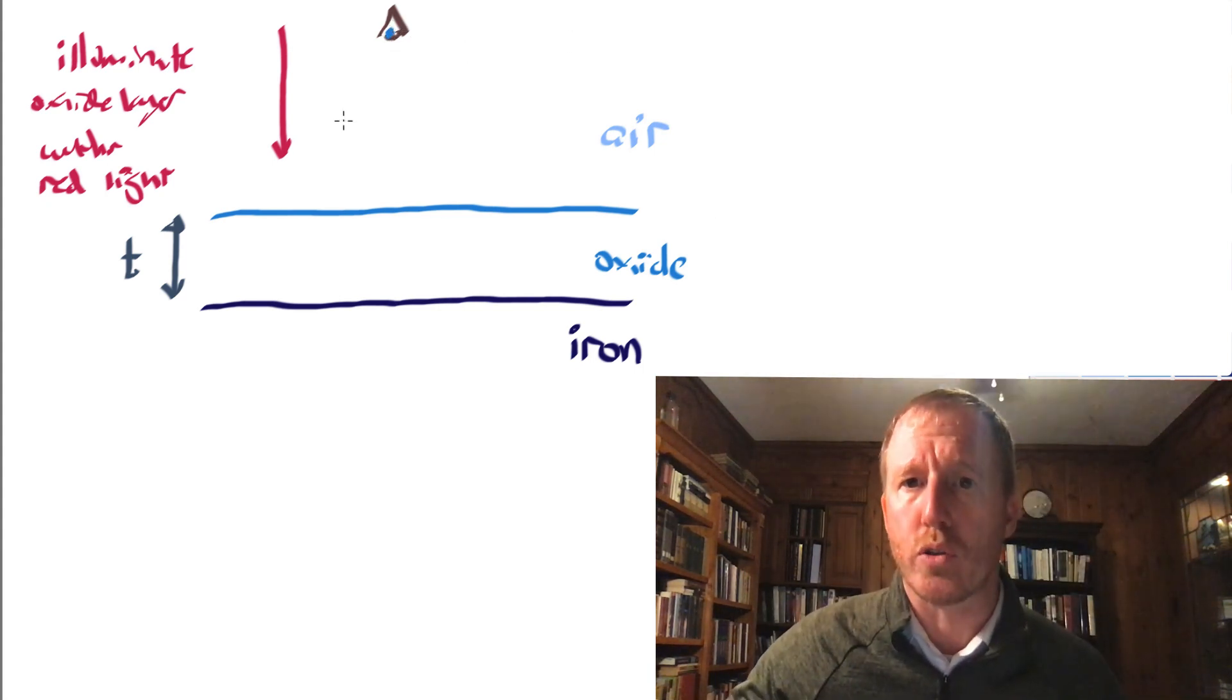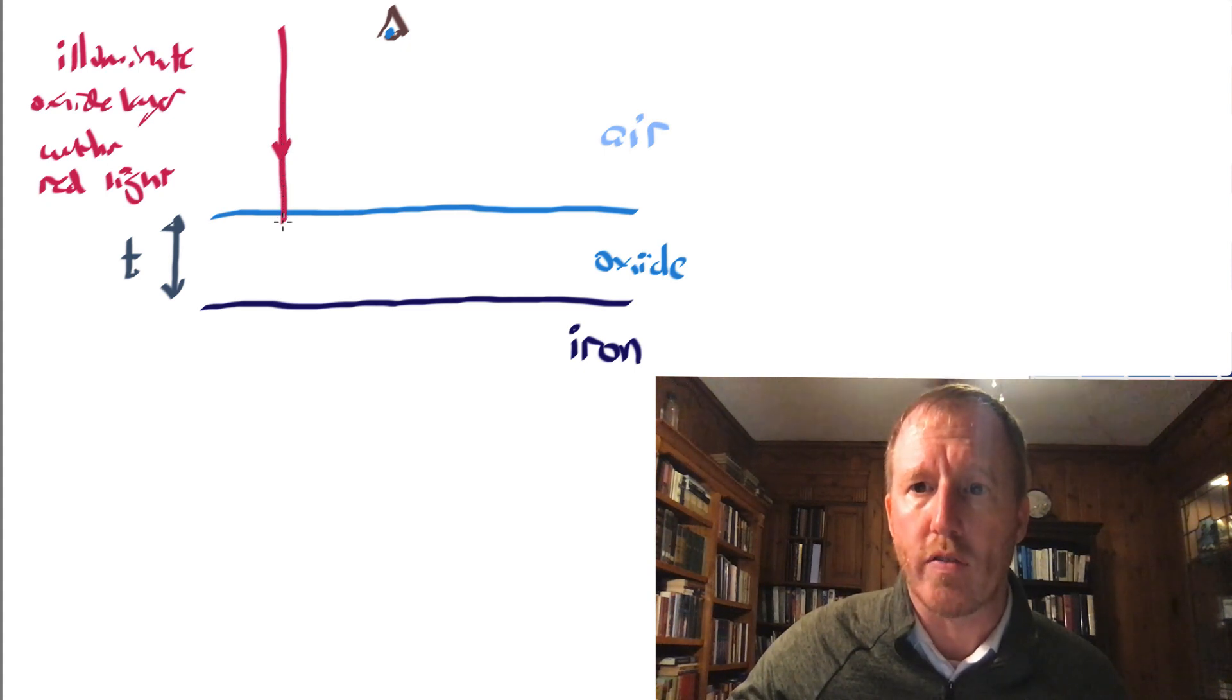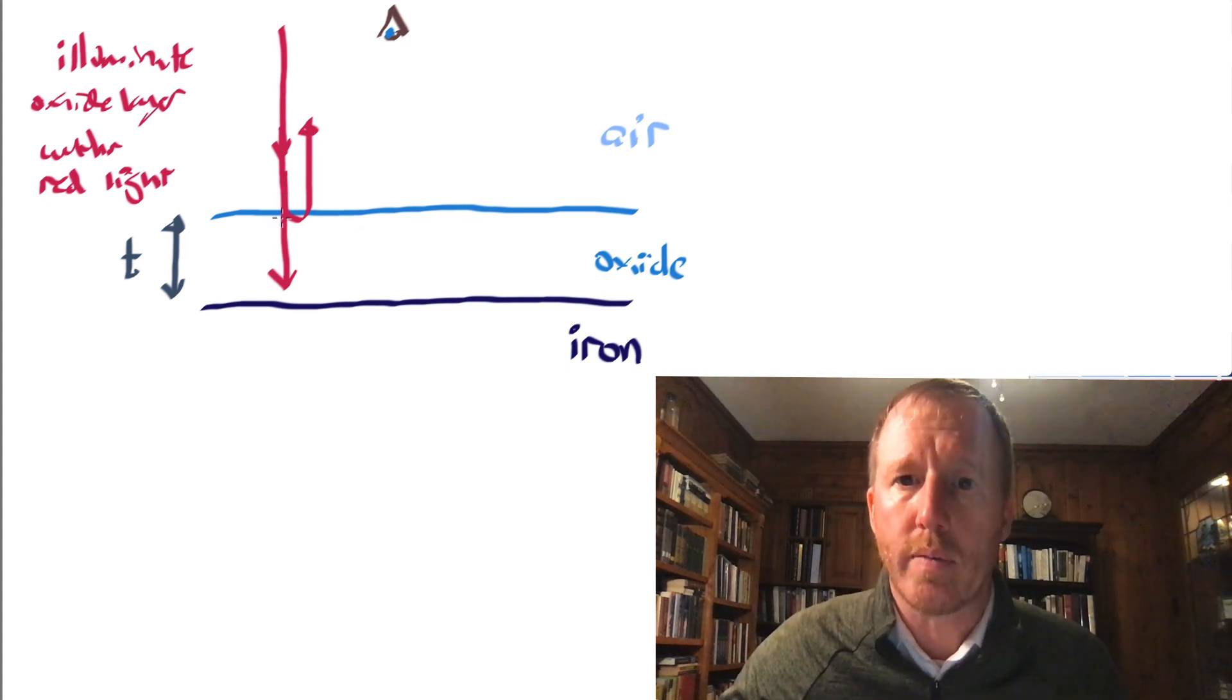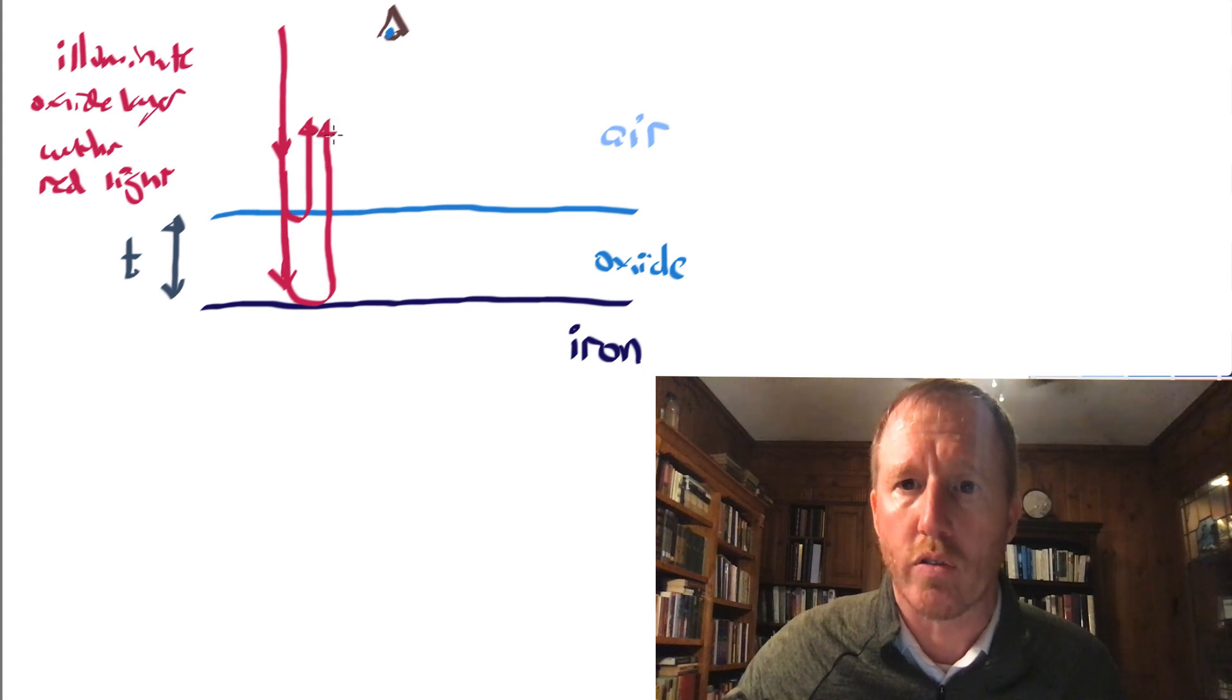Now what happens to this red light? Well, some of it is going to pass through this interface through the oxide like this. Some of it is actually going to reflect off of it. So I'm going to just sort of draw a U-turn here to indicate that it's reflecting off of it. And then some of it is going to go through and that light that goes through is going to reflect off of this surface, the iron. And I'll again make a U-turn like this to indicate that it's reflecting.